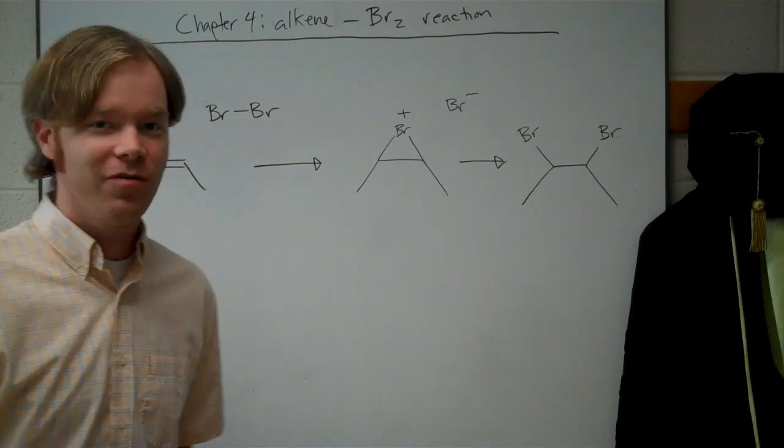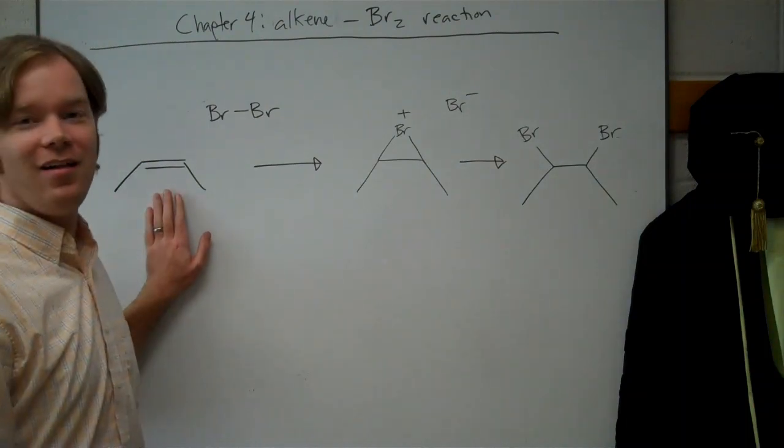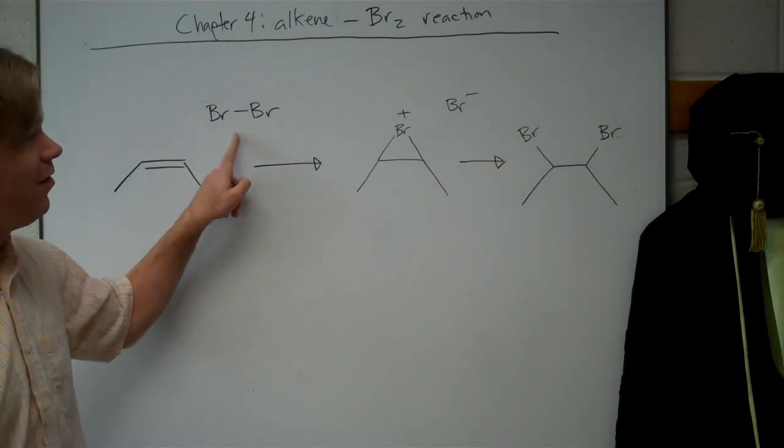This is another reaction of alkenes from Chapter 4. In this case, an alkene, cis, is reacting with Br2.